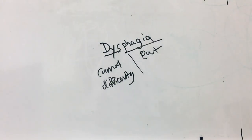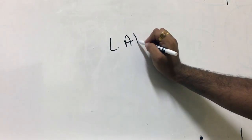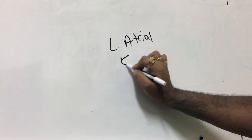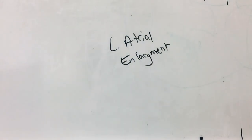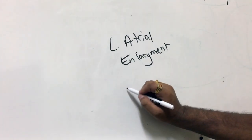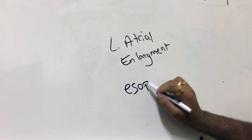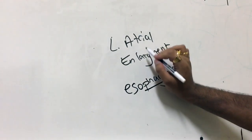Why would you get dysphagia with left atrial enlargement? Because directly posterior to the left atrium is the esophagus. If the left atrium is enlarged and impinging on the esophagus, a bolus of food passing down would get stuck. This is why a patient might complain that it's difficult to swallow — dysphagia is how it comes about.